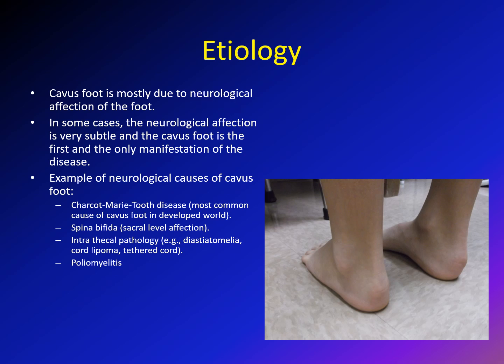Cavus foot, especially obvious cases, is usually due to neurological affection. Sometimes that neurological affection is very minimal and the cavus foot is the first — and sometimes the only — manifestation of the disease. Neurological causes include Charcot-Marie-Tooth (the most common cause in the developed world), spina bifida at the sacral level, and intrathecal pathology like diastematomyelia, cord lipoma, or tethered cord.